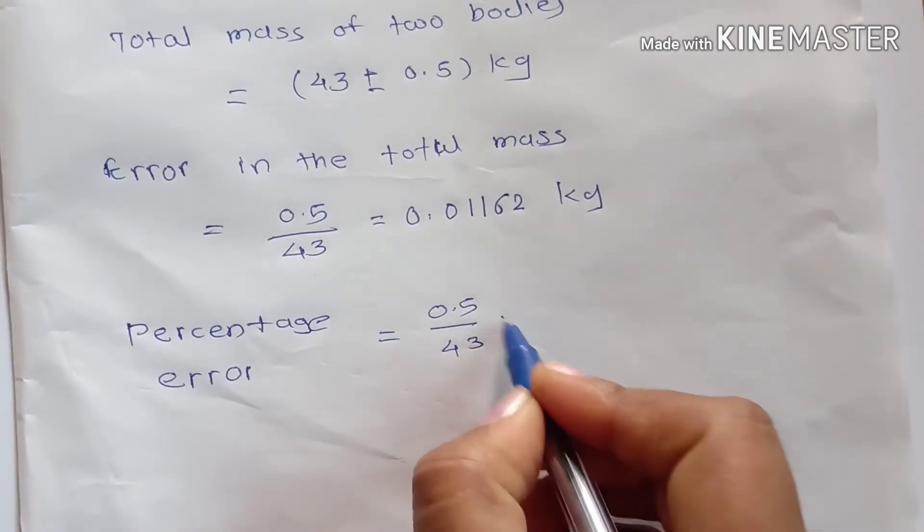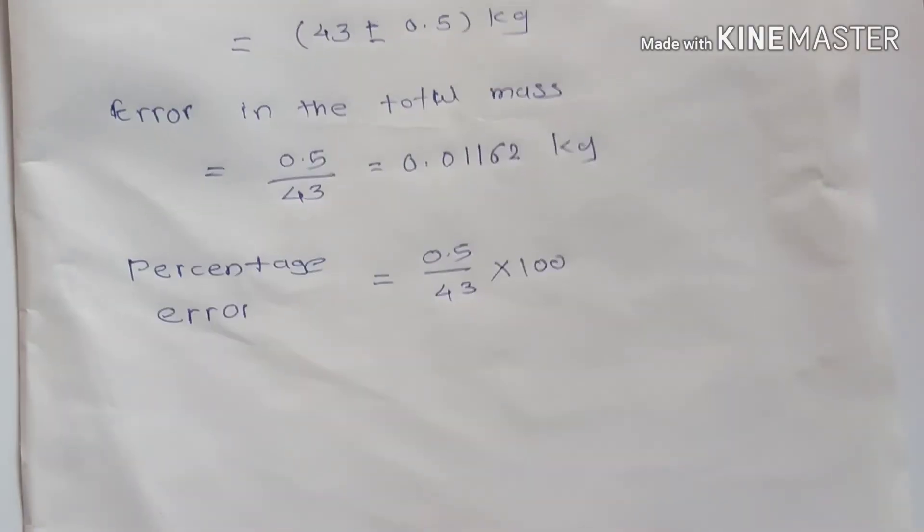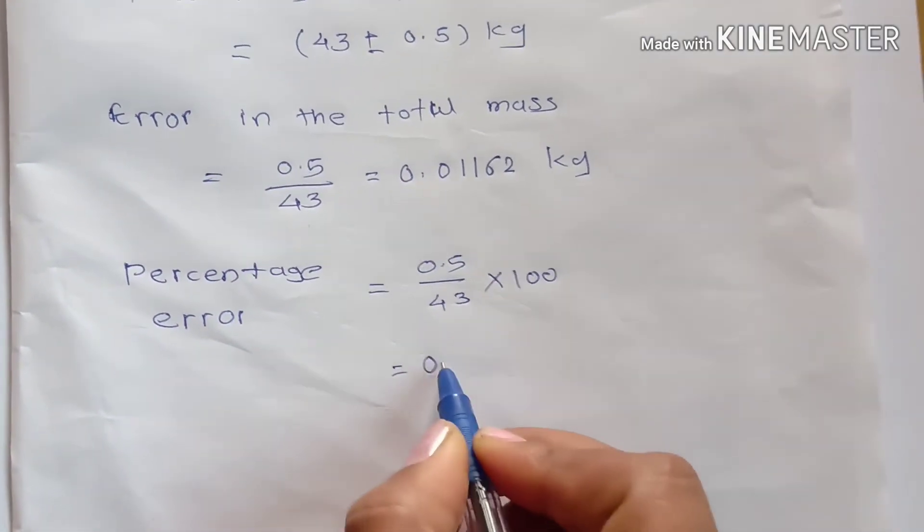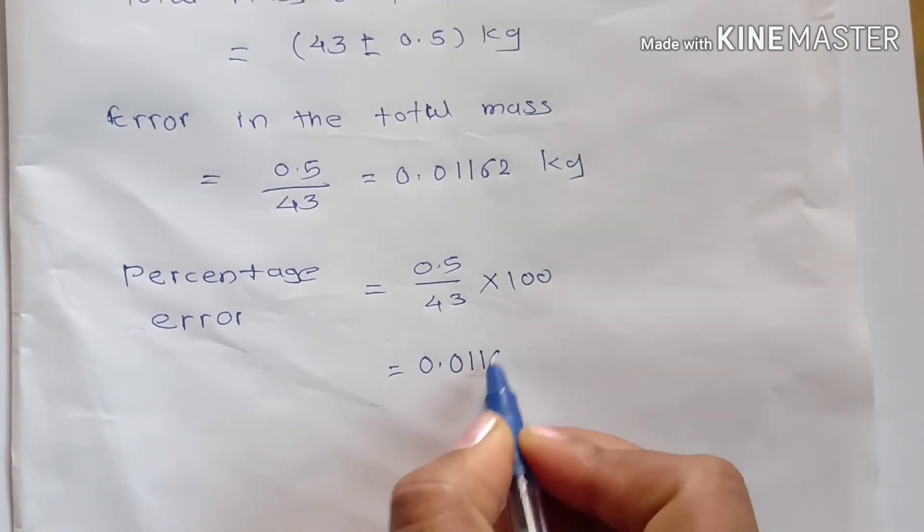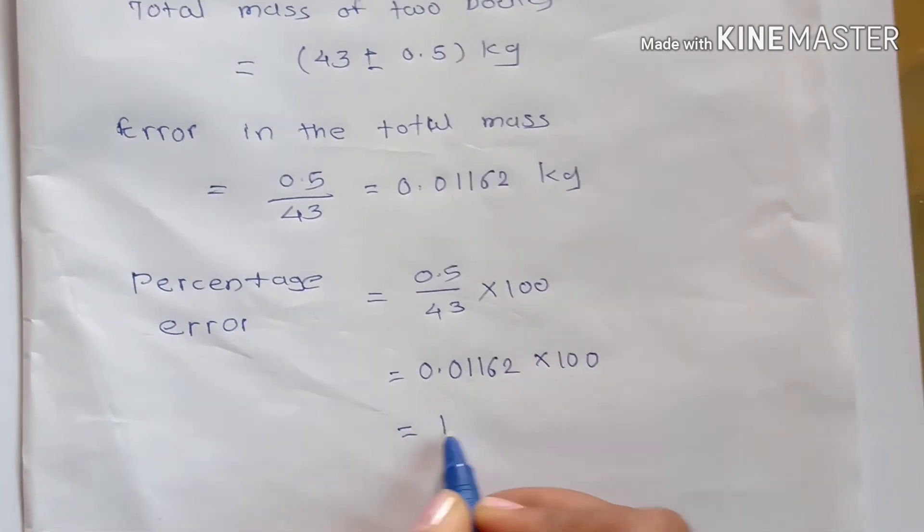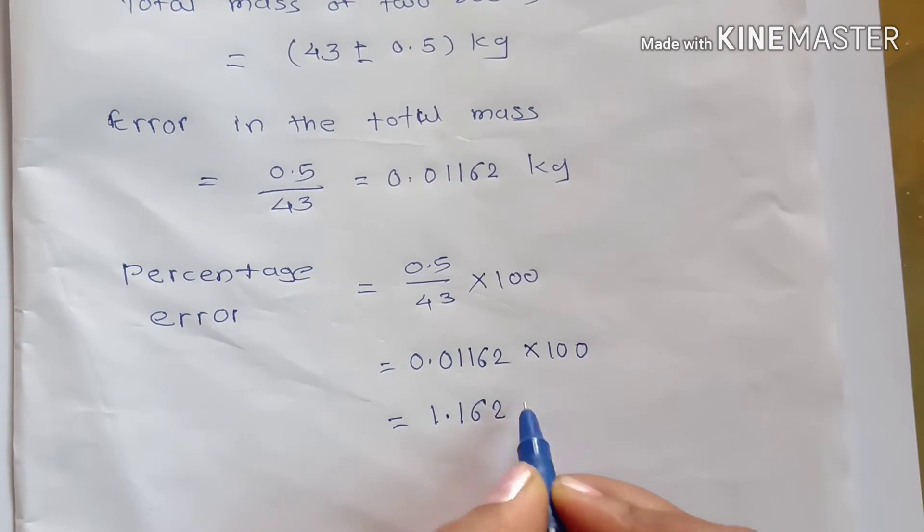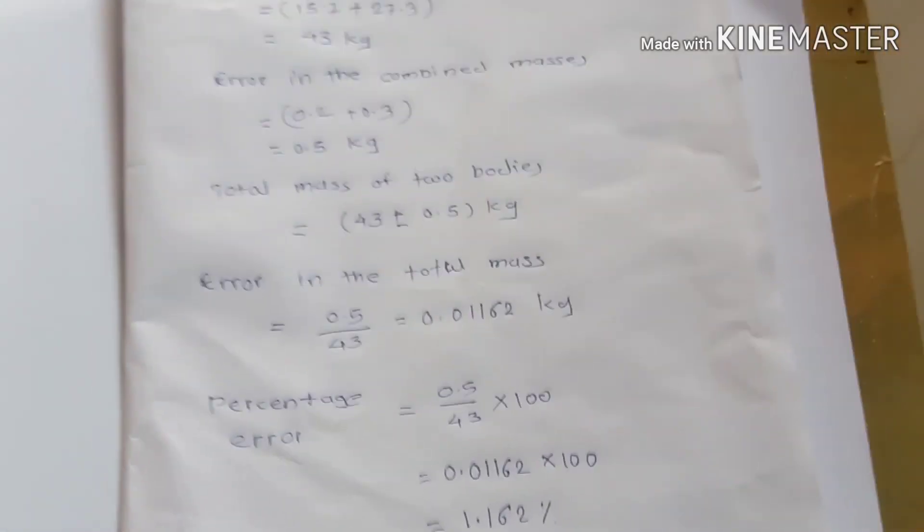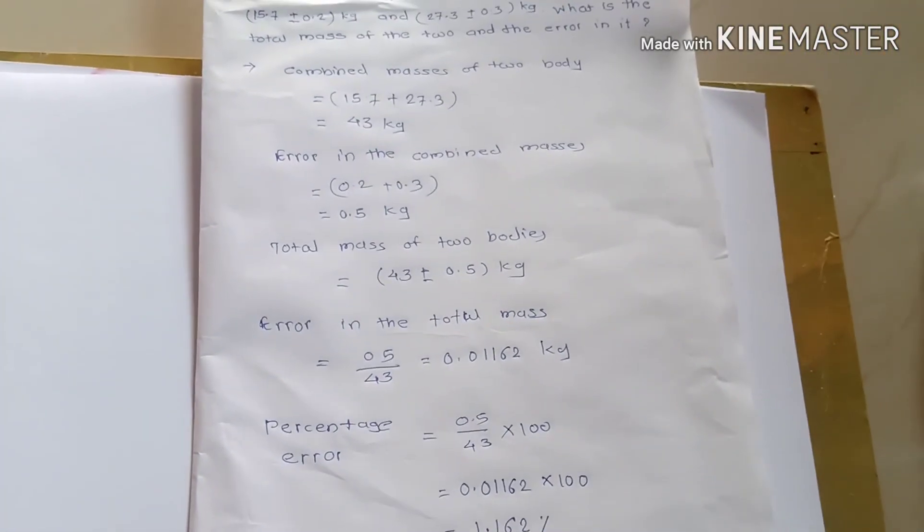Now percentage error is equal to delta m divided by m, 0.5 divided by 43, multiplied by 100. We have to calculate this quantity and their answer is 0.01162 multiplied by 100, and their answer is 1.162 percent. This is the answer of our question.